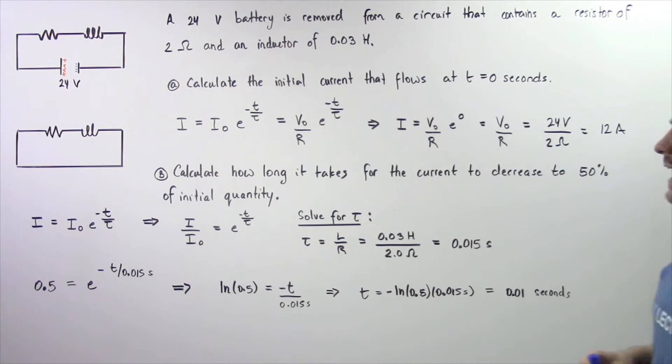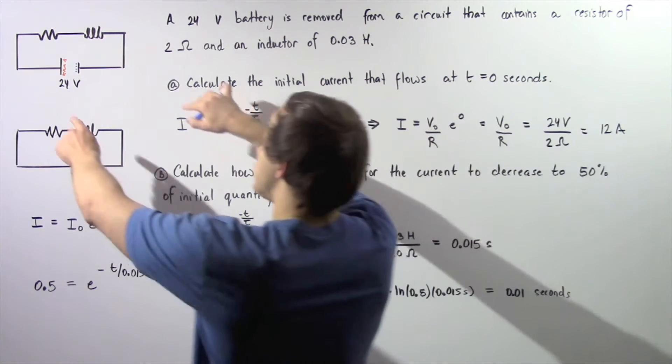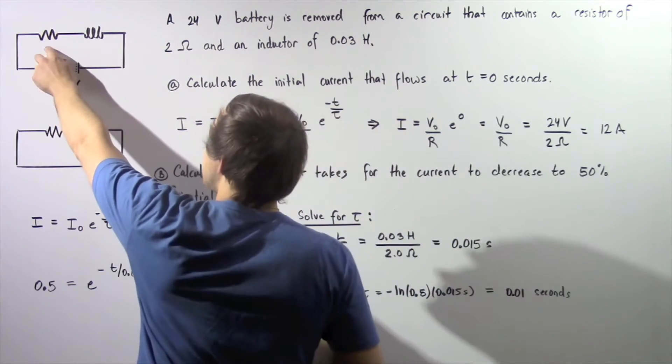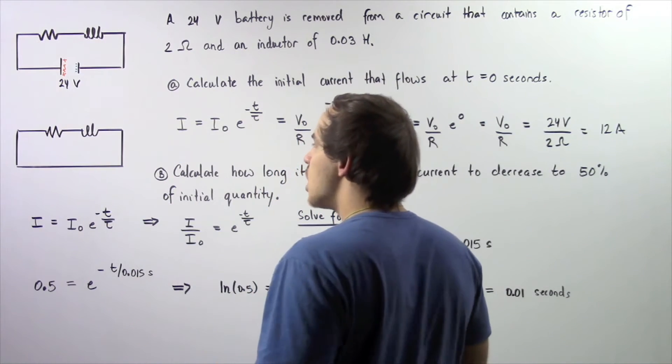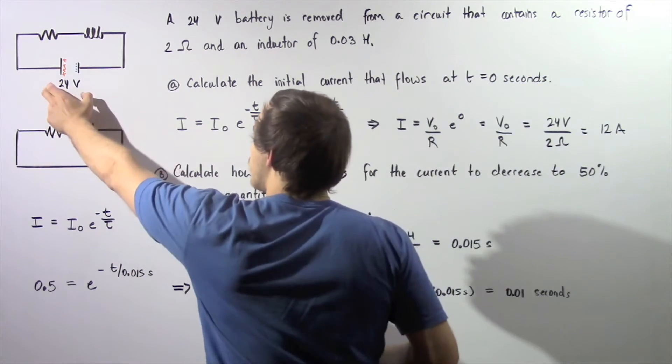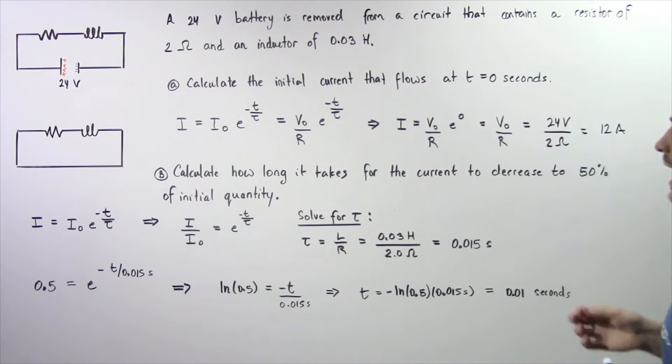In part A, calculate the initial electric current I that flows at time equals 0 seconds when we remove our battery. Let's suppose we have the following electric circuit. We have a resistor and an inductor and a battery of 24 volts. At time equals 0 seconds, we remove our battery, and that's exactly when we want to calculate our electric current I.